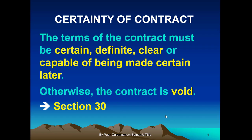The sixth element for the formation of a valid binding contract is certainty. Certainty here means the agreement must be clear, must be definite, must be detailed. There should be no uncertainty in the terms of the contract. Otherwise, the contract is void. This is provided under Section 30 of the Contracts Act 1950.